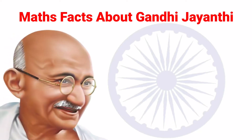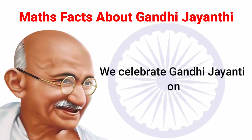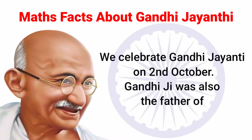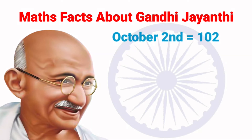Some max facts about Gandhi Jayanti: we celebrate Gandhi Jayanti on 2nd October. Gandhiji was also the Father of the Nation. The numerical form of October 2nd is 10/2, which is 102. Now let us learn the facts about the number 102.